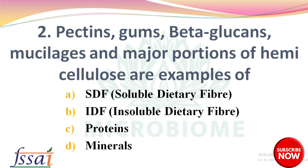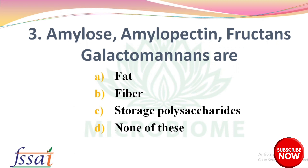Next question: pectins, gums, beta-glucans, mucilages, and major portions of hemicellulose are examples of — options: soluble dietary fiber, insoluble dietary fiber, proteins, minerals. The right answer is option A, soluble dietary fiber.